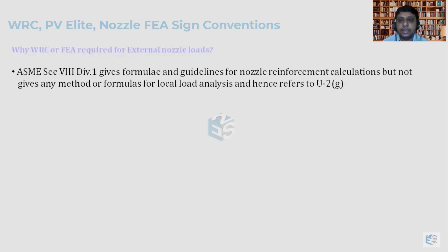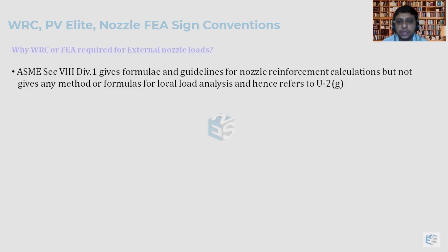Let's read it directly from the code. ASME Section 8 Division 1 gives the formulae and guidelines for nozzle reinforcement calculations but does not provide any method or formula for local load analysis, and hence we have to go for some good engineering practice which will be accepted by the authorized inspector.